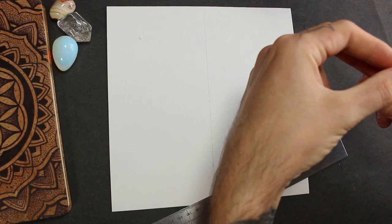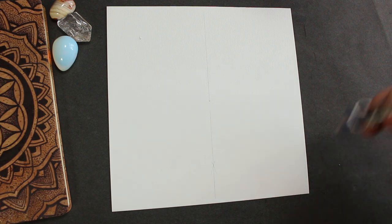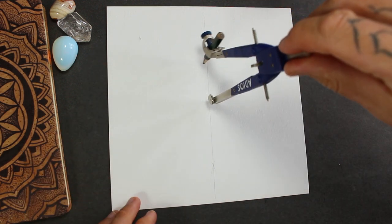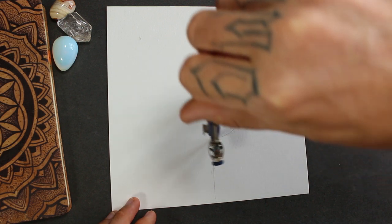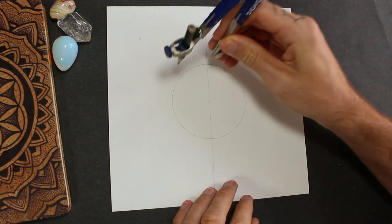So set the radius of the compass to four centimeters and we'll draw a circle right in the middle. And we're going to be drawing the seed of life.